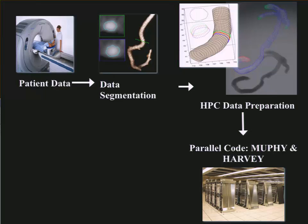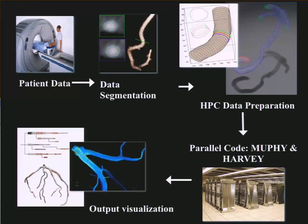In my PhD, I was working on a Fortran-based code called MUFI, and also Harvey, which is a C-based code I developed. At the end of this, we get output like what you see here, where we get shear stress maps and velocity flow profiles.